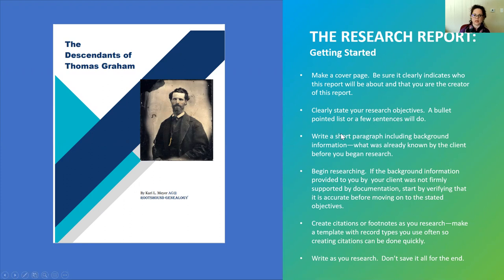Some of the other important things we're going to cover when writing the research report are clearly stating your research objectives. A bullet-pointed list or a few sentences will do — just make it obvious what your goals are and what you're going to do. Then you're going to write a short paragraph including background information, meaning the information that was provided to you by the client when you were hired.